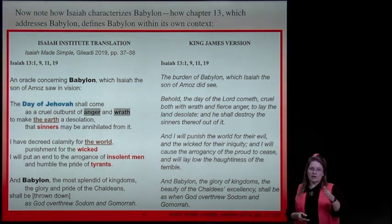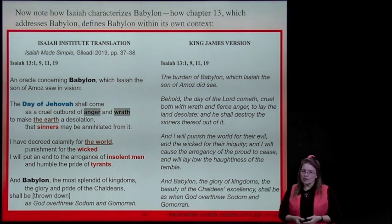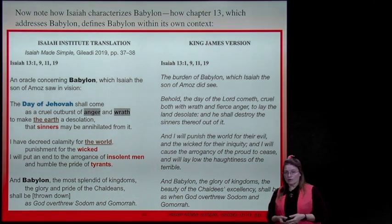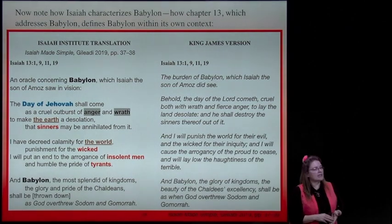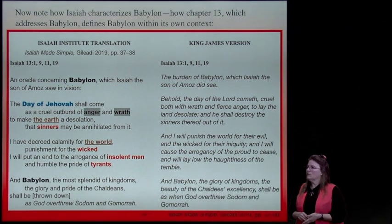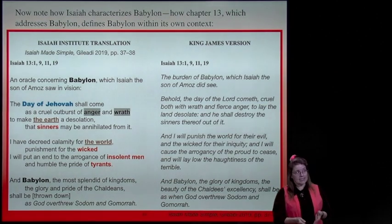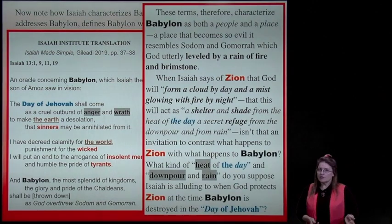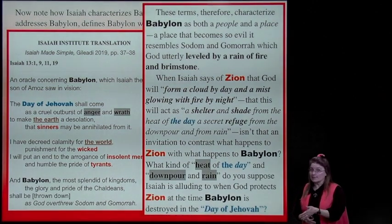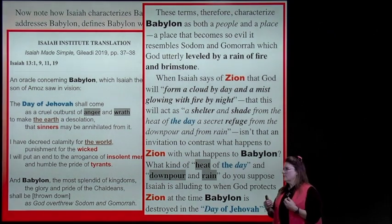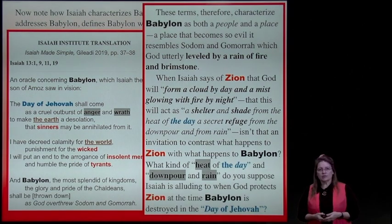But that's for another lesson. Just notice this: 'Babylon, the most splendid of kingdoms, the glory and pride of the Chaldeans, shall be thrown down as God overthrew Sodom and Gomorrah.' Now think for a minute how Sodom and Gomorrah were destroyed. Babylon will be destroyed in the last days in the same way. The terms characterize Babylon as both a people and a place—a place that becomes so evil it resembles Sodom and Gomorrah, which God utterly leveled by a rain of fire and brimstone.